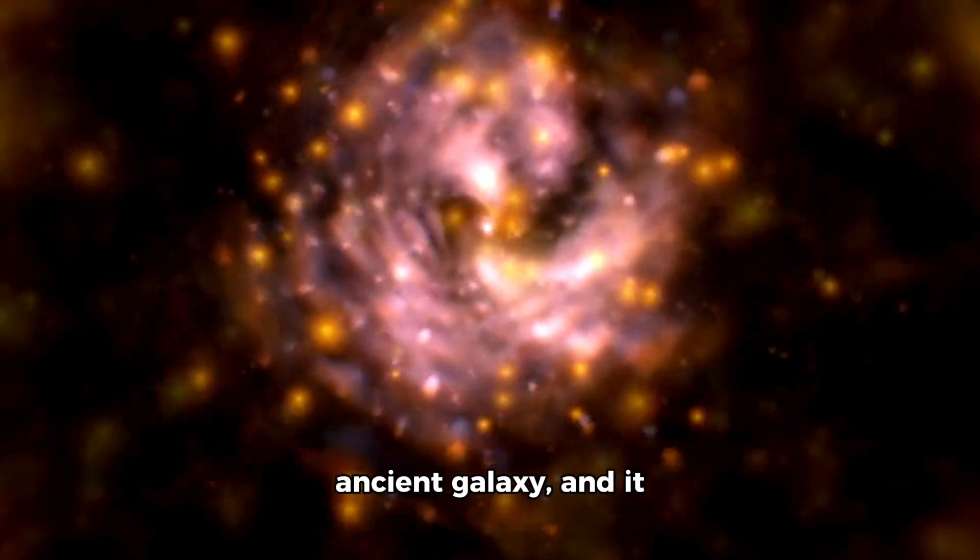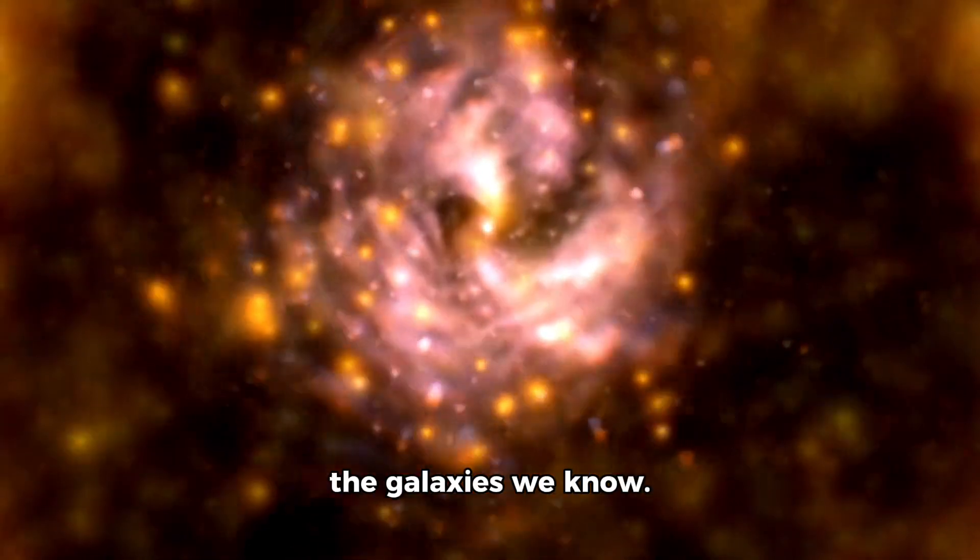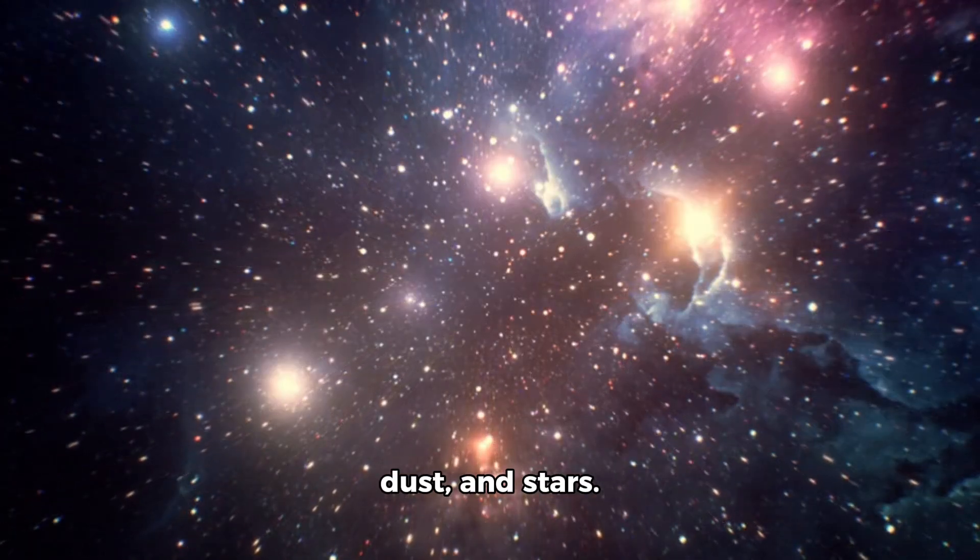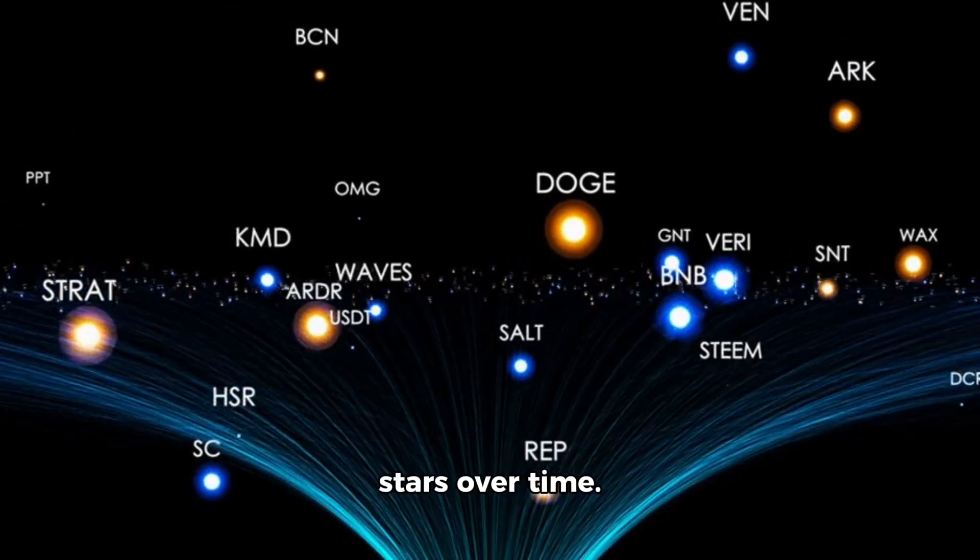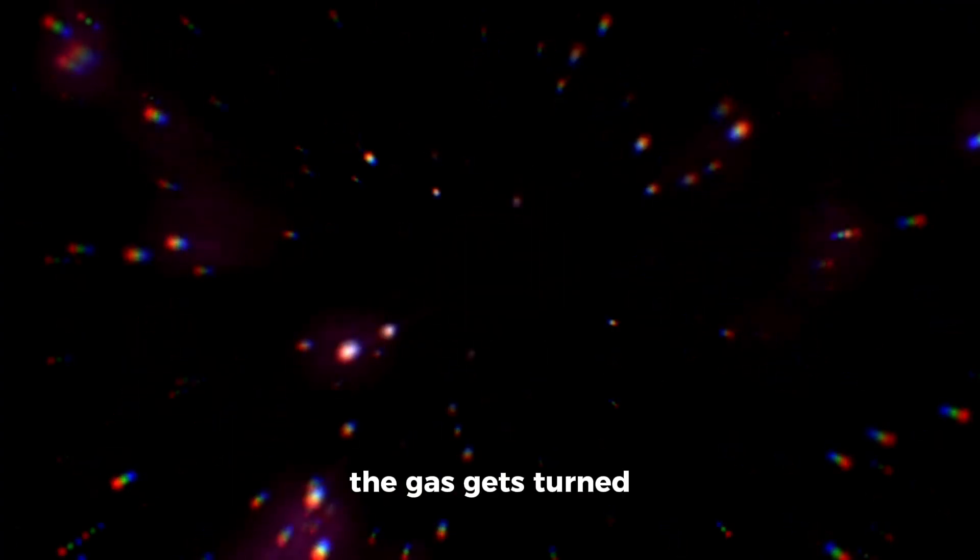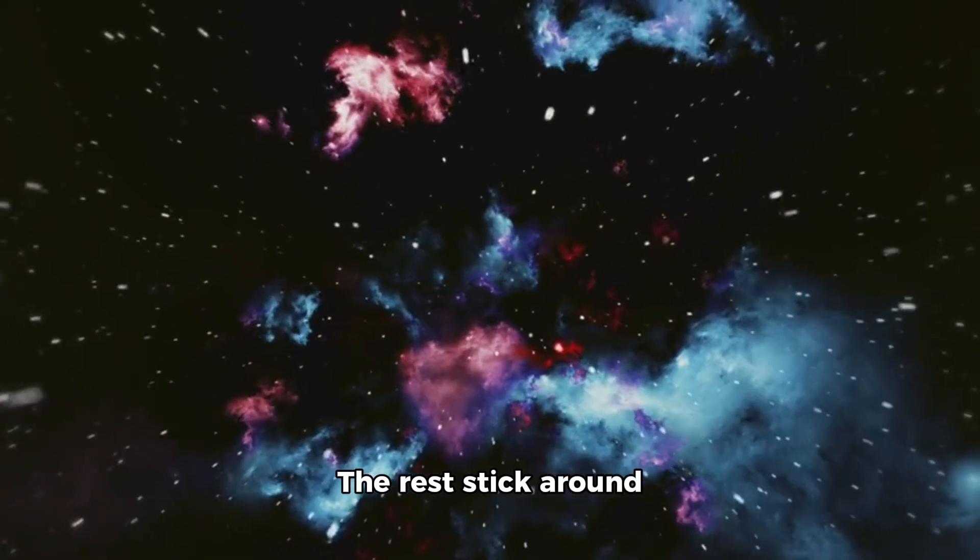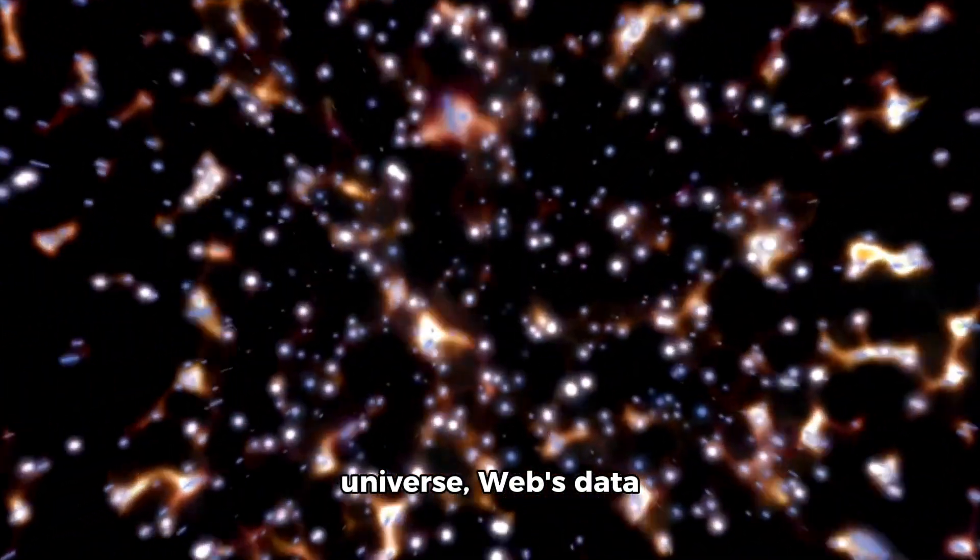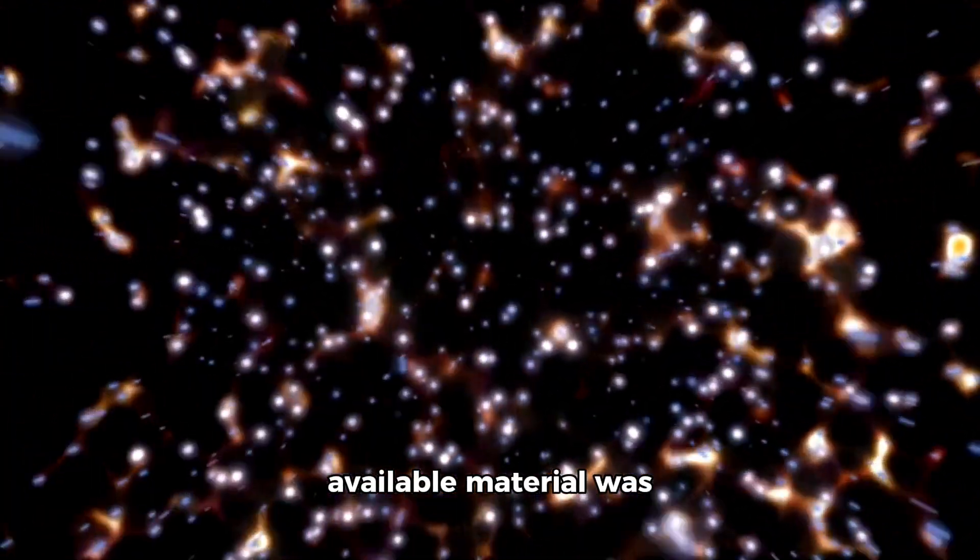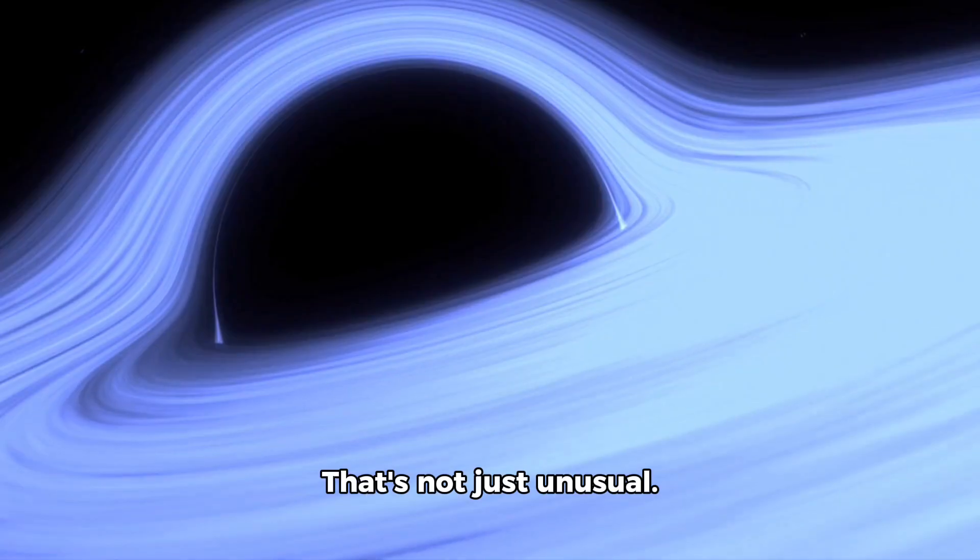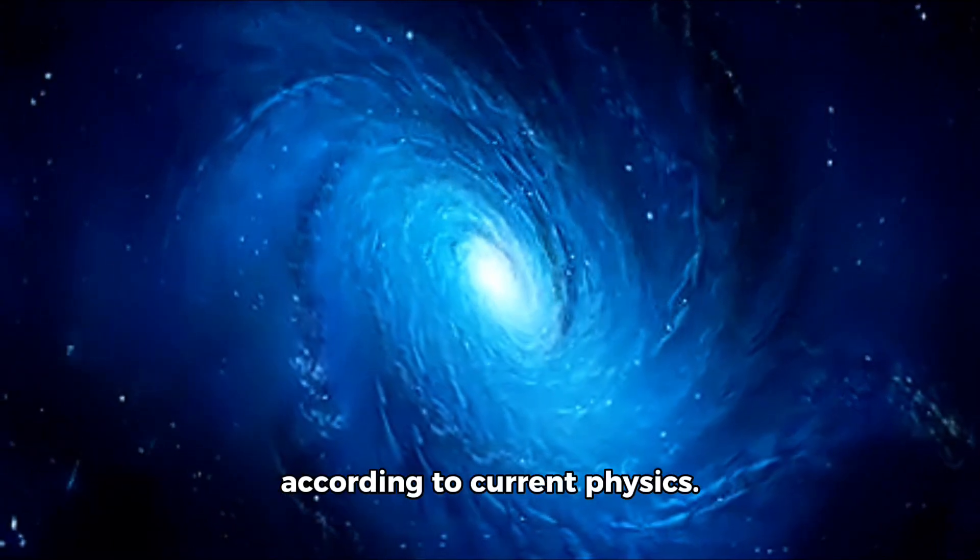And wait till you see this. The Webb telescope captured a stunning image of one such ancient galaxy, and it doesn't look anything like the galaxies we know. Usually, galaxies are a mix of gas, dust, and stars. The gas is key. It's what forms new stars over time. But here's the shocker. In most galaxies, only about 10% of the gas gets turned into stars. The rest stick around doing galaxy stuff. But in this new batch of galaxies from the early universe, Webb's data shows 100% of the available material was turned into stars. All of it. Every atom. No leftovers.